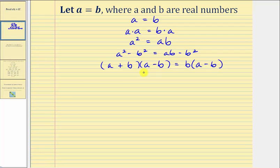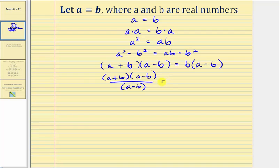In this form, notice how both sides of the equation contain a factor of A minus B. So we'll divide both sides by the quantity A minus B. On the left, we have the quantity A plus B times the quantity A minus B divided by the quantity A minus B. On the right, we have B times the quantity A minus B divided by the quantity A minus B. The quantity A minus B divided by A minus B simplifies to one on both sides.